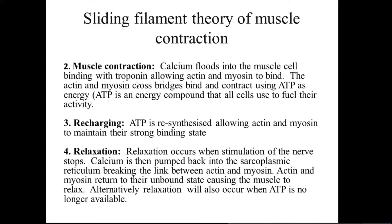When troponin's structure is not changed, it remains intact on the actin filament. As long as the troponin-tropomyosin complex is attached to actin, it does not provide a binding site for myosin. Therefore, the muscle is in a relaxed state, and actin and myosin return to their unbound state, causing the muscles to relax.